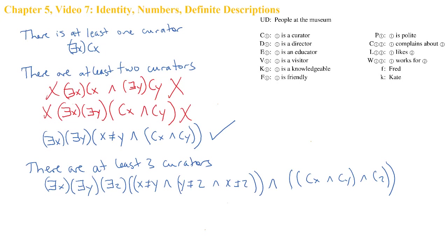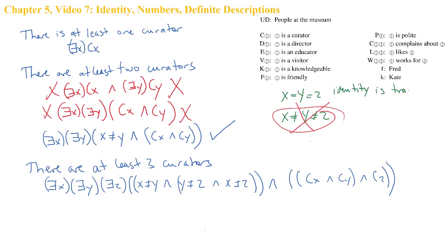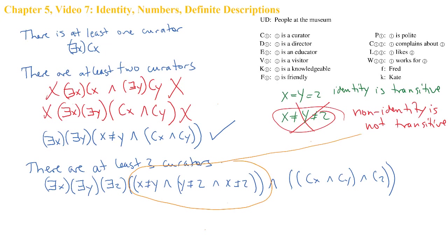A quick note here about the usage of the negated identity predicate. In mathematics, when three quantities are identical you can abbreviate that as x = y = z. But you can't abbreviate non-identity in that way, because x could be non-identical to y and y non-identical to z while z is identical to x. The reason is that identity is transitive, but non-identity is not transitive. So we do need to write all three distinctness claims, and it cannot be abbreviated.